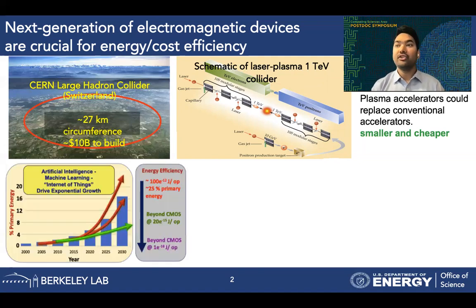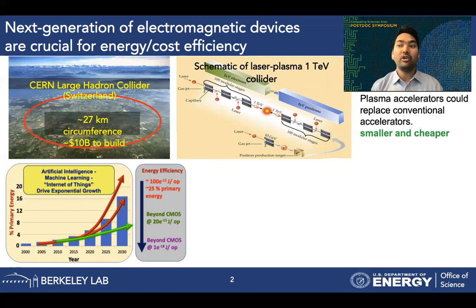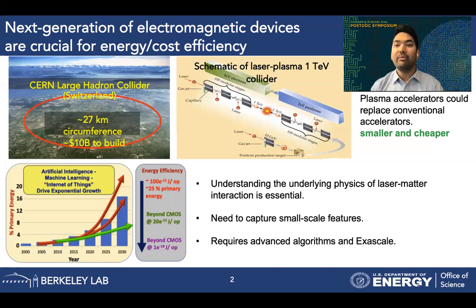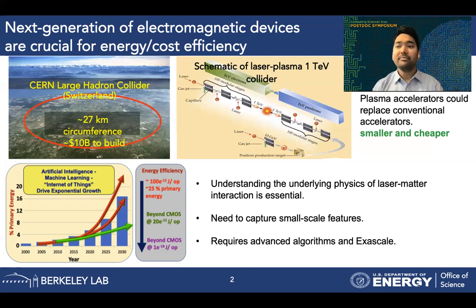On the other hand, it is well known that information technology represents the fastest growing energy consumer in the world. Traditionally, the challenges of energy consumption by microelectronics have been addressed by shrinking the transistor dimensions, but that process has significantly slowed down and no longer follows the famous Moore's law. We are part of a larger DOE microelectronics co-design team where we have proposed to enable energy efficient computing by exploring correlated phenomena in materials such as electronic spin or negative capacitance effects in ferroelectric materials. When it comes to accurately modeling these devices, we need to capture small scale features, which is made more challenging due to the multi-scale nature of the problem.